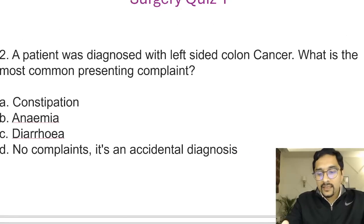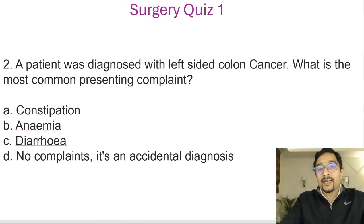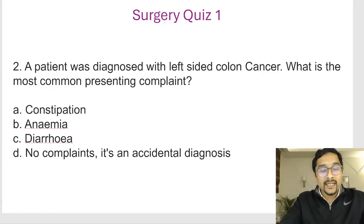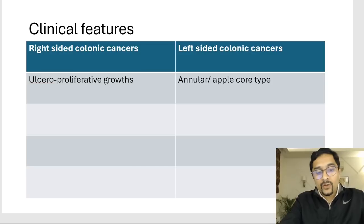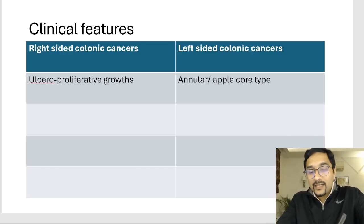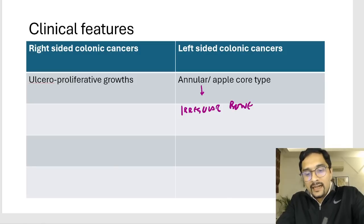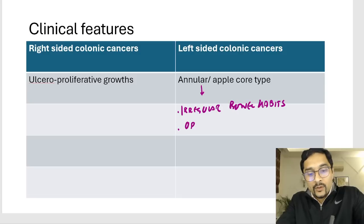The second question has been asked many times in the exam: a patient is diagnosed with left-sided colon cancer — what is the most common presenting complaint? Left-sided colon cancers are annular or apple-core type growths and they present early with irregular bowel habits. Because they are annular growths, these patients will develop obstruction and constipation — those are the early features for left-sided lesions.